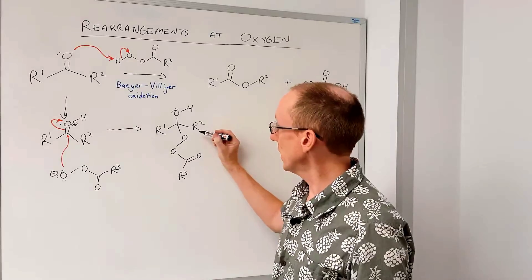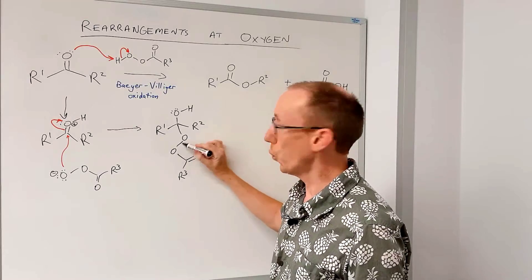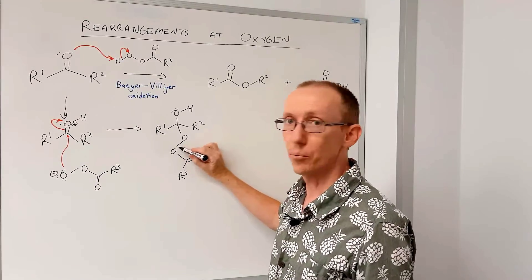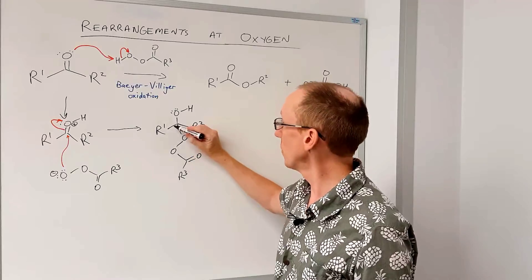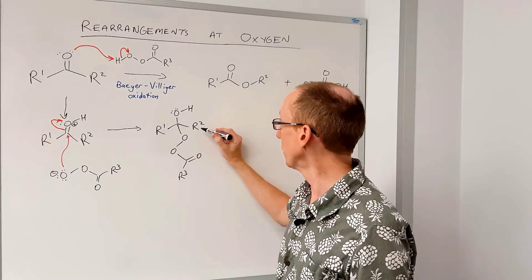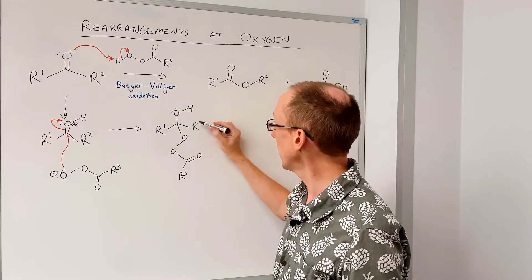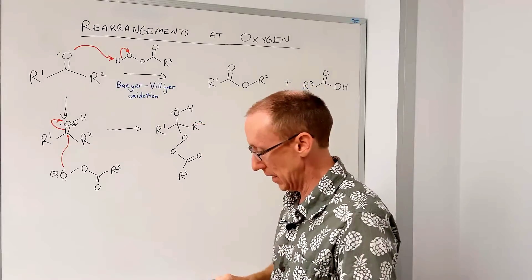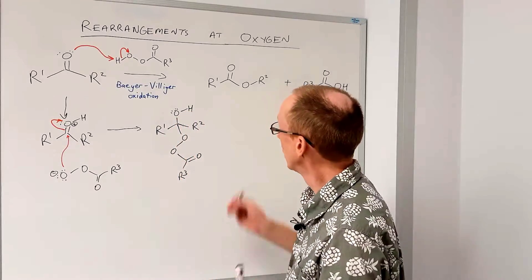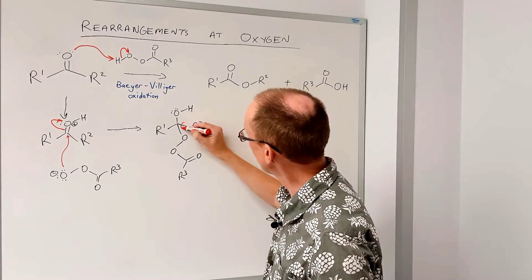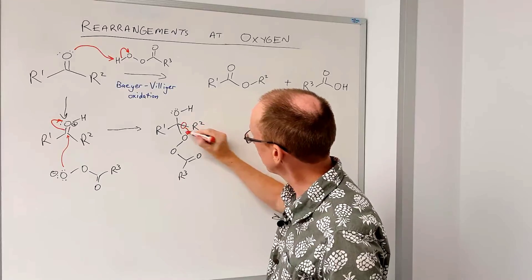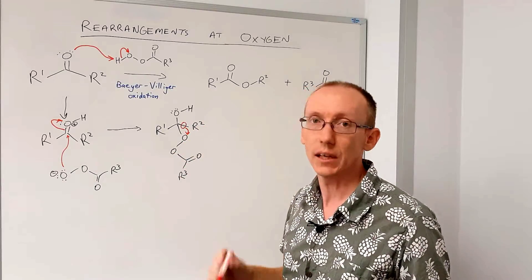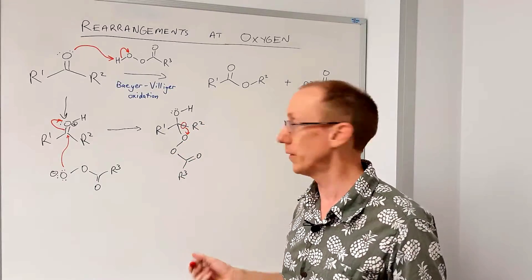This intermediate has a weak oxygen-oxygen bond, and that can break along with migration of one of these two R groups. So R2, with its pair of electrons, is going to migrate to one of these oxygen atoms, and the leaving group is going to be a carboxylate, which is a pretty good leaving group.